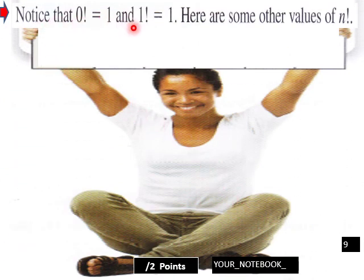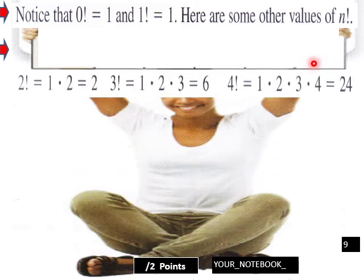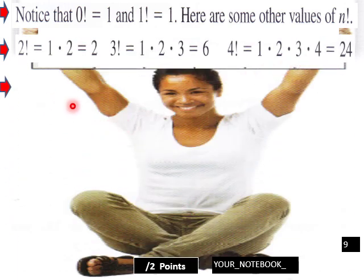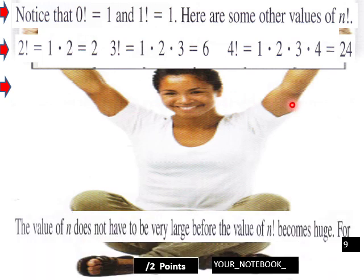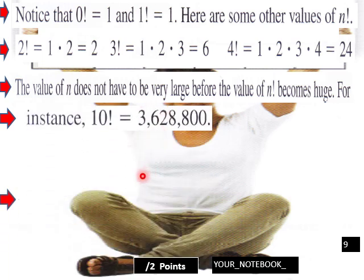Notice that 0! = 1 and 1! = 1 as well. Here are some other values: 2! = 2, 3! = 6, 4! = 24. The value of n does not have to be very large before n! becomes huge — for instance, 10! = 3,628,800, so it gets large in a hurry.